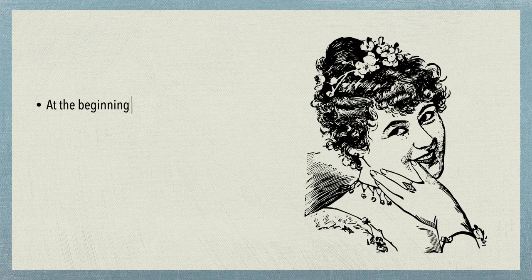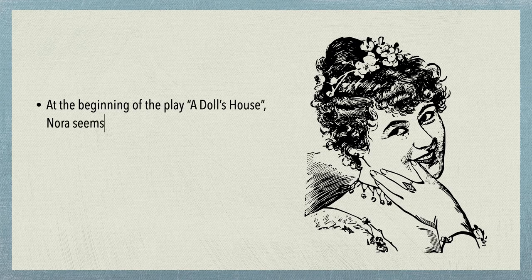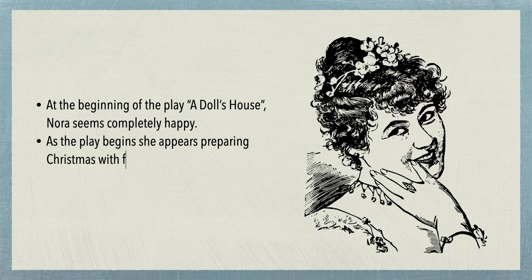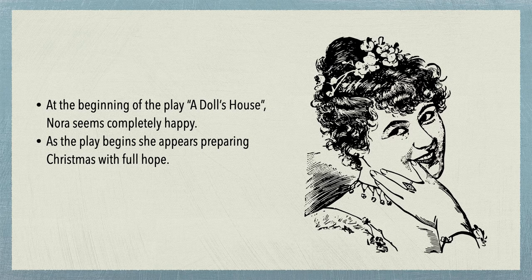At the beginning of the play A Doll's House, Nora seems completely happy. As the play begins, she appears preparing for Christmas with full hope. She appears as a naive child who lacks knowledge of the world outside her home. Nora is a cheerful woman who enjoys her life, celebrating Christmas with cute enthusiasm. She is a sympathetic woman who cares about those around her; she brings a gift for her maid on the occasion of Christmas, which shows that she is a good human being by nature.